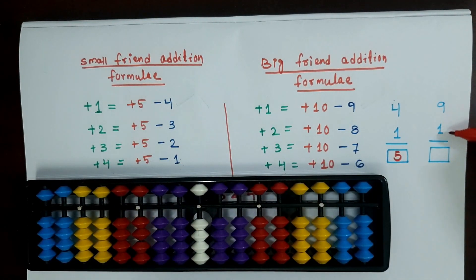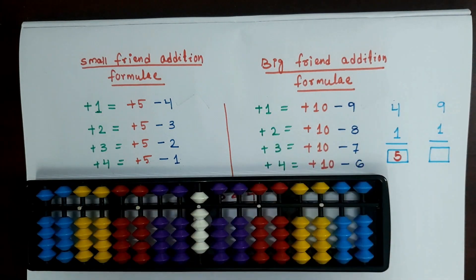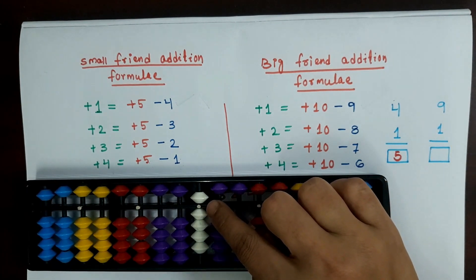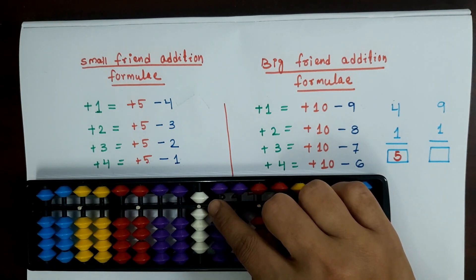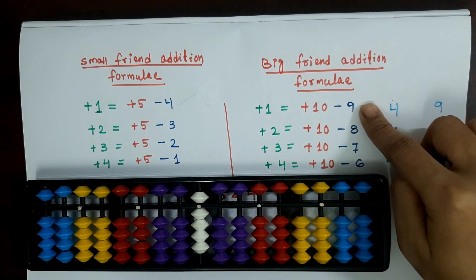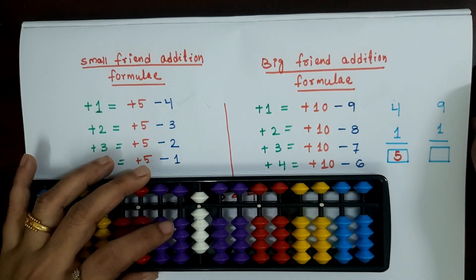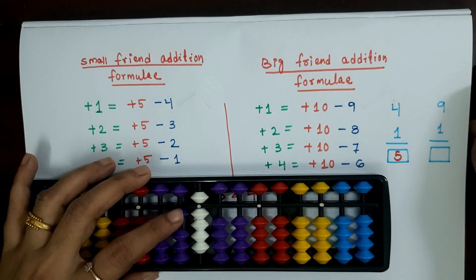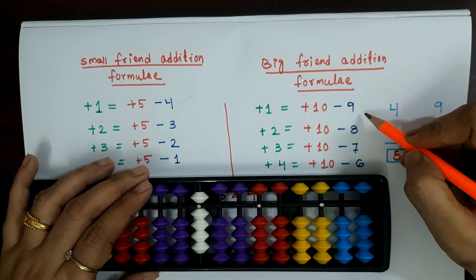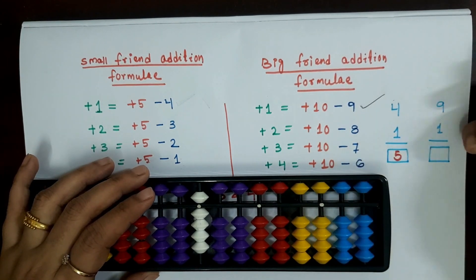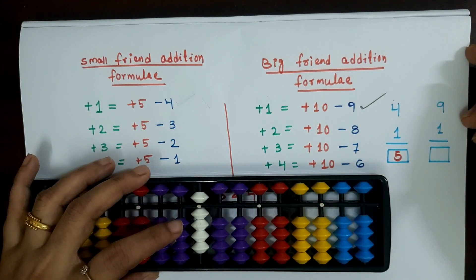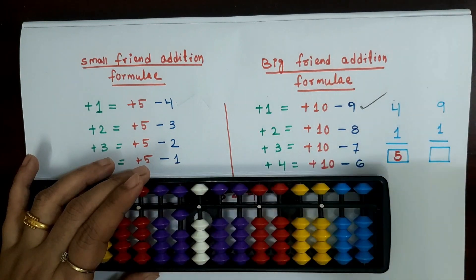Let us see this example: 9 plus 1. Here we have to check whether we can apply the small friend addition of 1 or not. For applying the small friend addition of 1, we must have the bead of 5 available at the 1 slot, but here we have already used the bead of 5. So the small friend addition of 1 is not possible. In this case, we have to take the help of big friend addition of 1, which equals plus 10 minus 9. For plus 10, we have to take the help of the tens lower beads. So: plus 1 equals plus 10 minus 9. Our answer is 10.